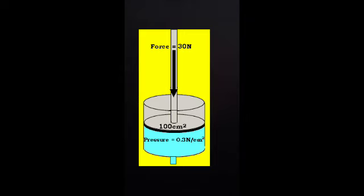Types of force. Activity 11: Pick up an object lying on a table. Is force required for this? Muscular force is needed to lift the object. This force is applied by the muscles of your hands and is called muscular force. When a horse pulls a tonga, it applies the muscular force of its body through its legs. In the same way, when a weight lifter lifts weight, he applies muscular force with his legs and arms.